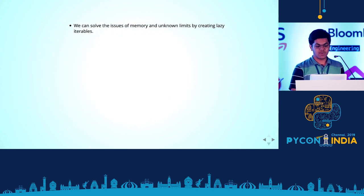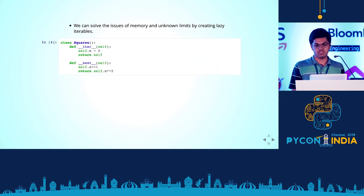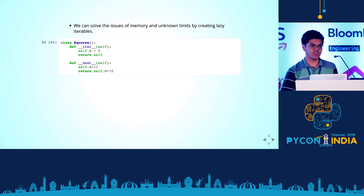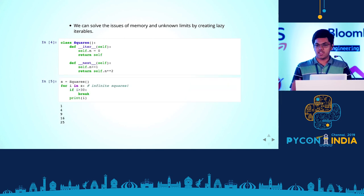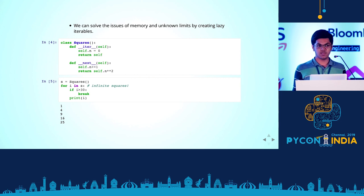Going back to lazy iterables, using this scheme we can easily write our own version of a squares lazy iterator by just implementing __iter__ and __next__. In __iter__ you set n to zero, and every time you call next you return n squared. You can get your infinite squares, and it's only one square at a time, so no memory problems. That's why I had to put in an if condition there to make sure I could break.